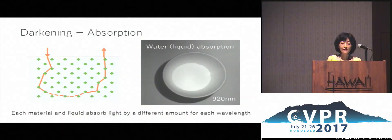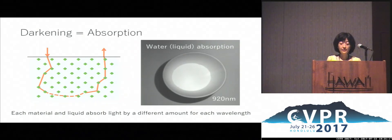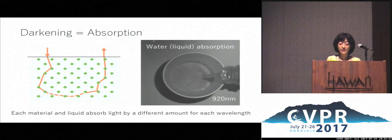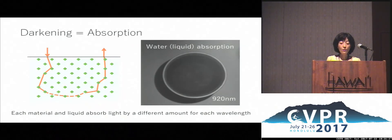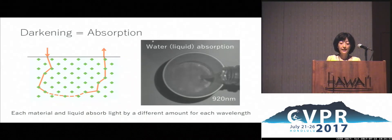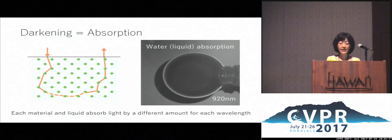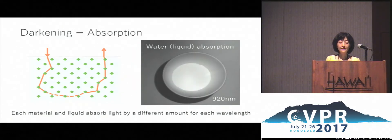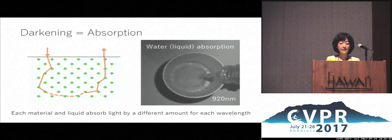When the surface gets wet, the medium between its particles will be filled with the liquid. And generally, the liquid will absorb light more than air. For water, as you can see here where I am pouring water into a cup, the more water I have, the darker it becomes. Each material and liquid absorb light by a different amount for each wavelength, and this leads to the darkening of wet surfaces.